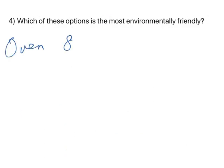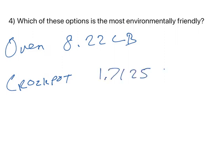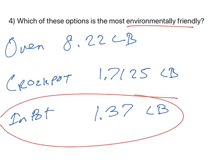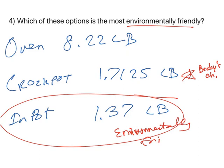Comparing the results: the oven produced 8.22 pounds of CO2, the crock pot produced 1.7125 pounds, and the instant pot produced 1.37 pounds. The instant pot is the most environmentally friendly because it produces the least CO2. The crock pot is also a great option — personally I love a crock pot. But the instant pot wins on environmental grounds, while the oven just makes your whole kitchen hot.